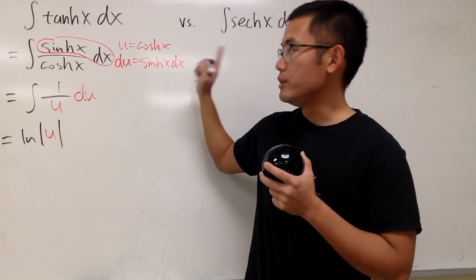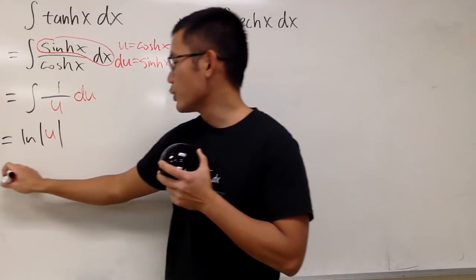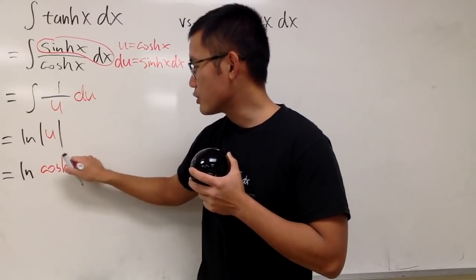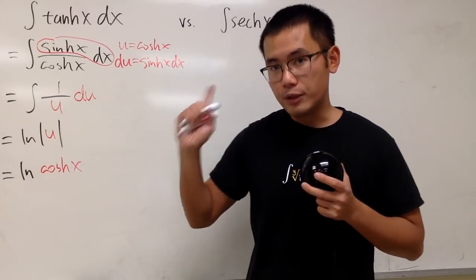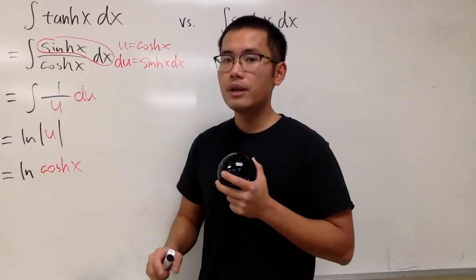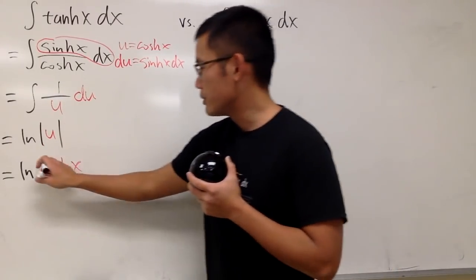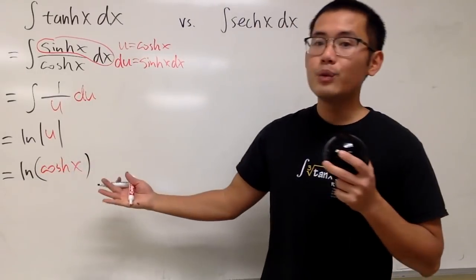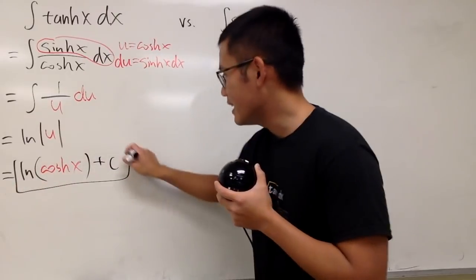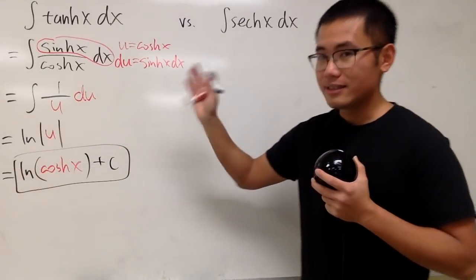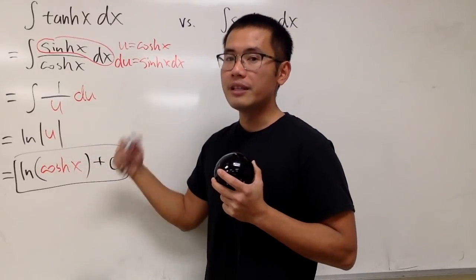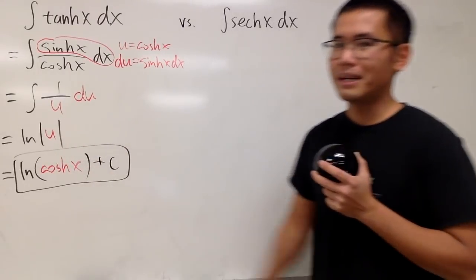But we need to go back to the x world, so we get natural log of cosh x. Now, for cosh x, this is always positive, so you don't need the absolute value, you can just put down a parenthesis. We can put down plus c, and that's it. Cosh x is always positive because it's (e^x + e^(-x))/2, so it's always positive.